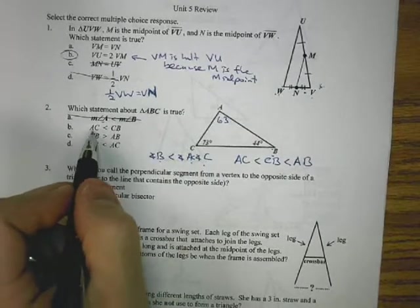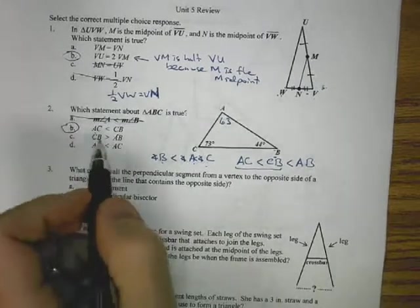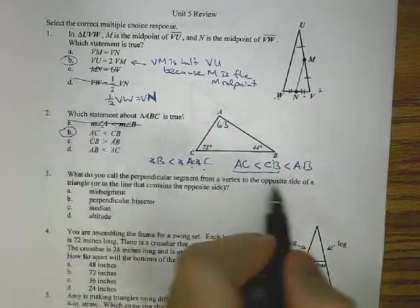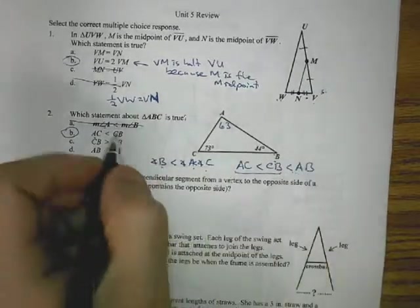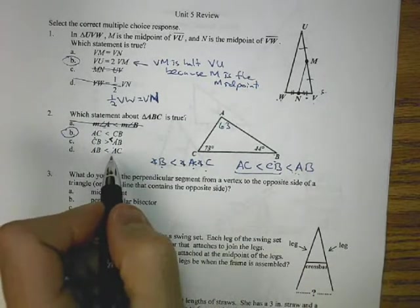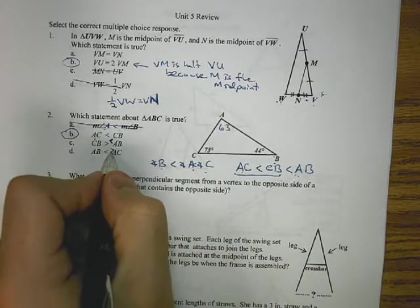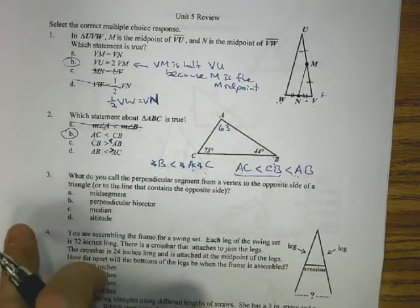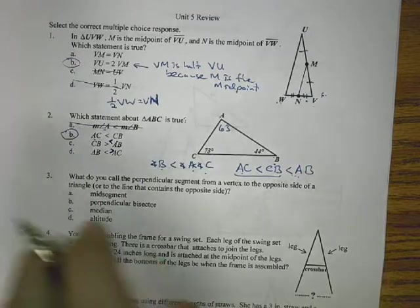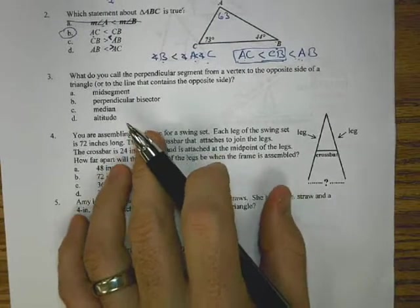So I can look at my inequalities now. AC is the smallest, and that's less than CB, which is what I have here. Looks like a good answer. CB less than AB, that's not true. AB is the biggest. AC greater than AB, that one should actually be going the other way. So we're going to go with B.